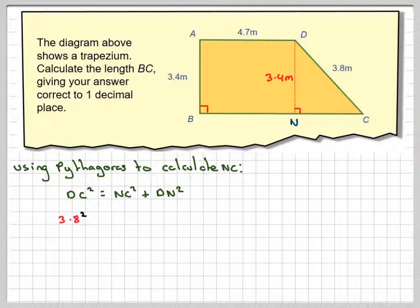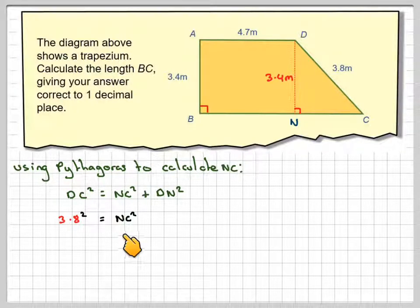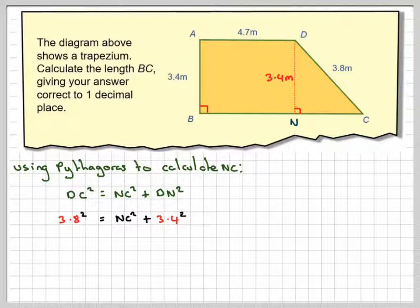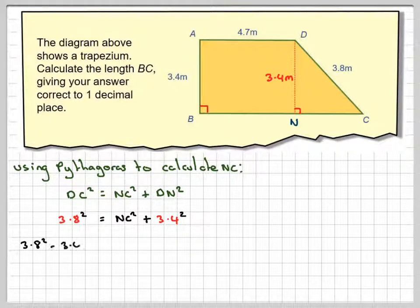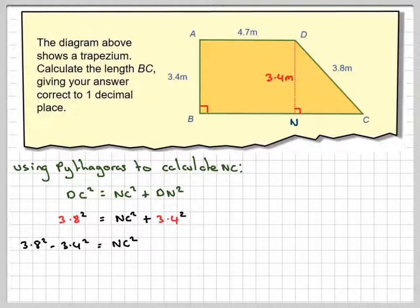So that's going to be 3.8 squared — the longest side of the right angle triangle — is equal to NC squared, which we want to find, plus 3.4 squared. Therefore 3.8 squared minus 3.4 squared is equal to NC squared.